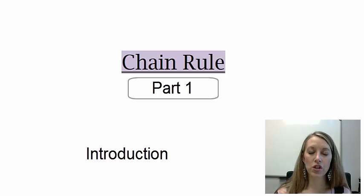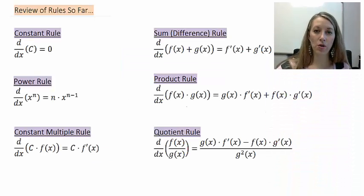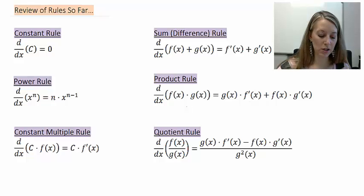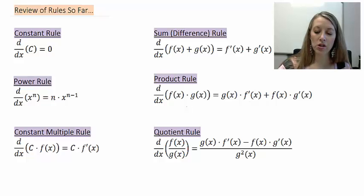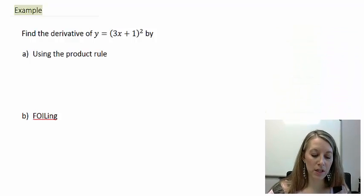We have one more differentiation rule to learn, and that is called the chain rule. Let's go ahead and review the rules that we know so far. We learned the four shortcut rules earlier, and in the last couple of sections we focused on the product rule and the quotient rule. So let's utilize the rules so far as we know them to take the derivative of this example here.